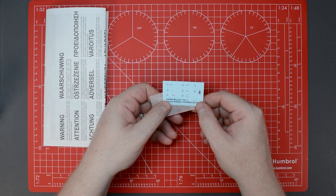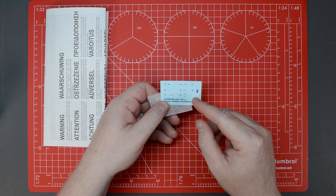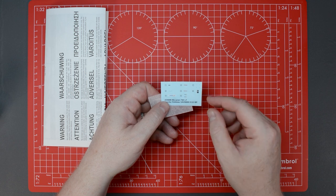The supplied transfer sheet covers all of the badges for the model as well as a small detail for the centre console screen.